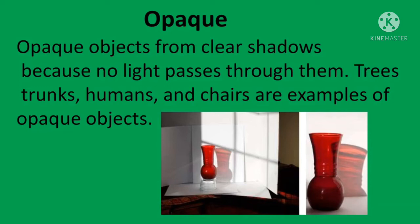Opaque objects form clear shadows because no light passes through them. Tree trunks, humans, and chairs are examples of opaque objects. An opaque object is something that allows no light through it — concrete, wood, and metal are some examples. Some materials can be opaque to light but not to other types of electromagnetic waves. The majority of objects are opaque, meaning you can't see through them, because light can't pass through them. Examples include wood, gold, cement, metal, some types of colored plastic, and vegetation.